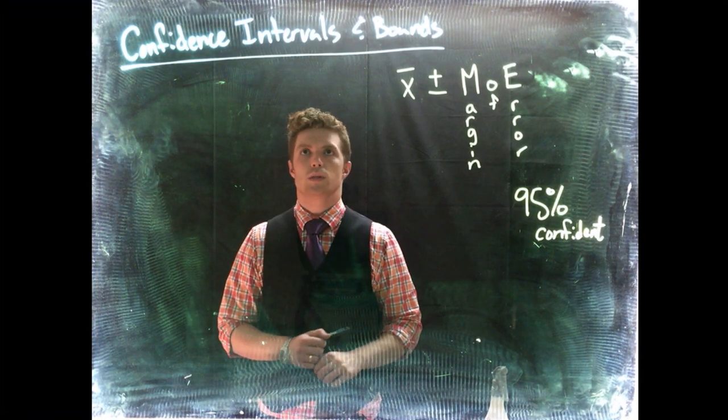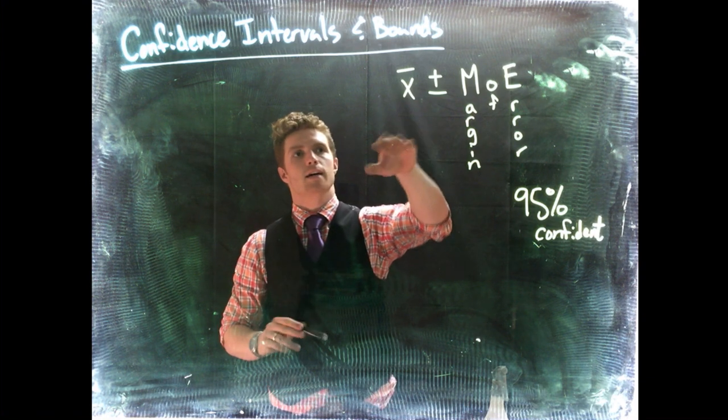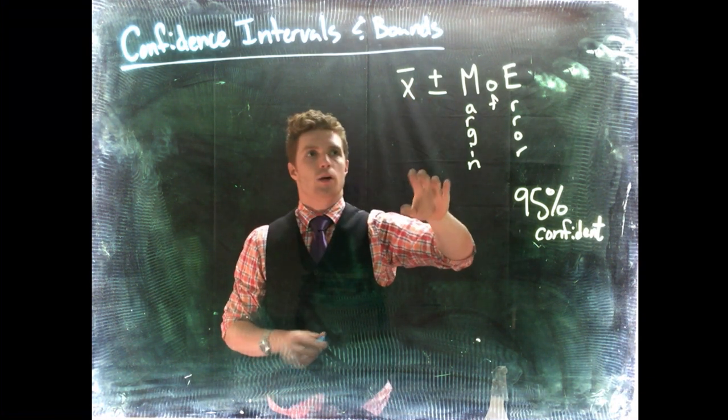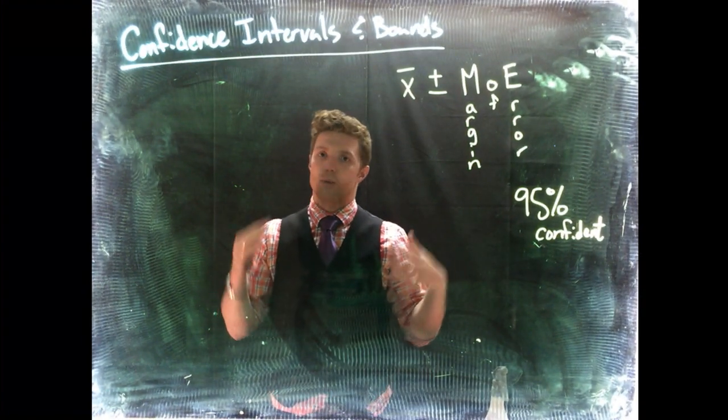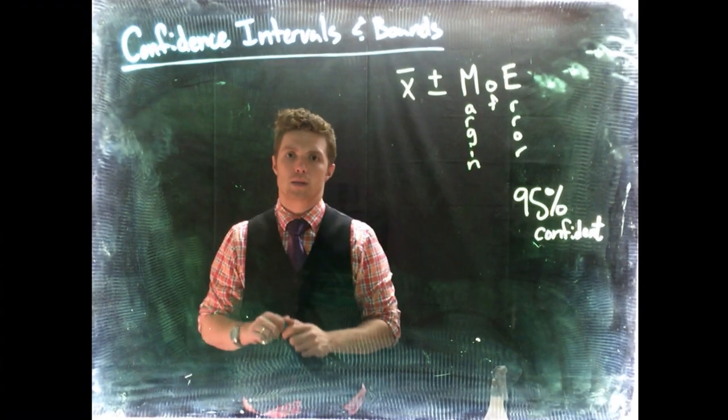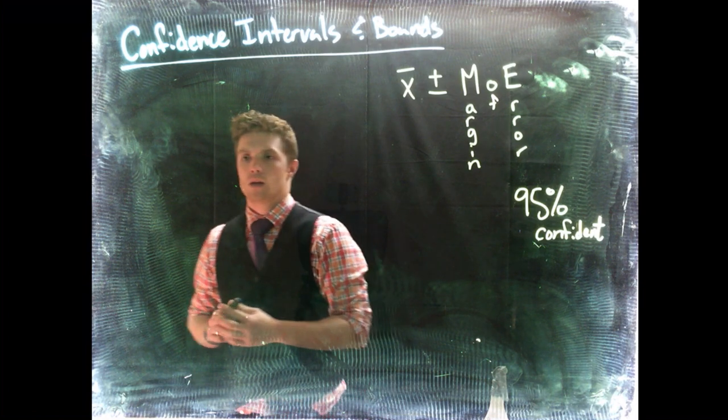Okay, so in our last video we talked about confidence intervals and bounds and introduced the idea that we've got our sample mean and then we want to go plus or minus somewhat. We want to have this range where we can say we are confident that we have captured the true population parameter, in this case, the true population mean.